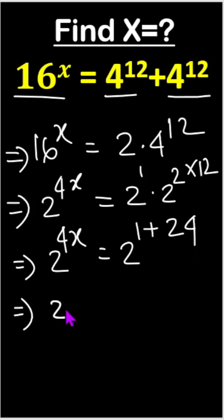Now, 2 to the power 4x equals 2 to the power 1 plus 24 means 25. Now look, once bases are the same, powers will be equal.